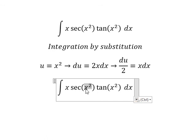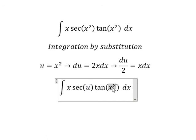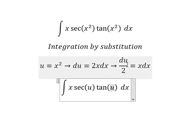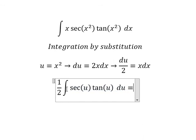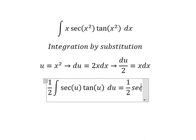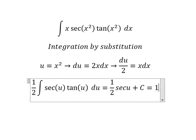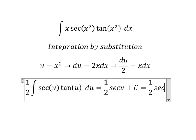So this one we change for u. x dx we change for du over 2. The integration of this one, we have secant of u. u is x squared.